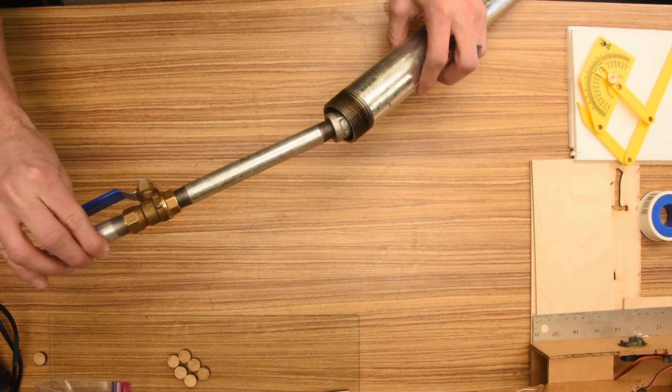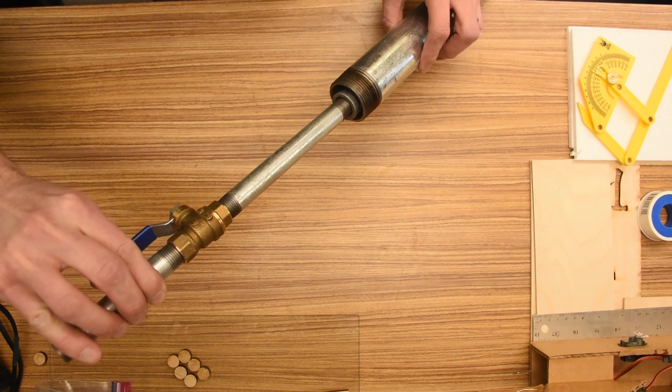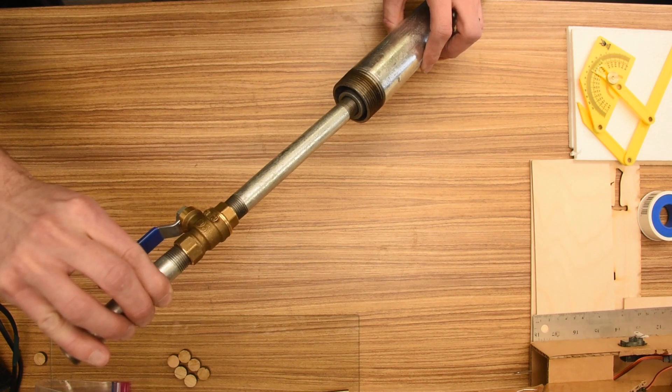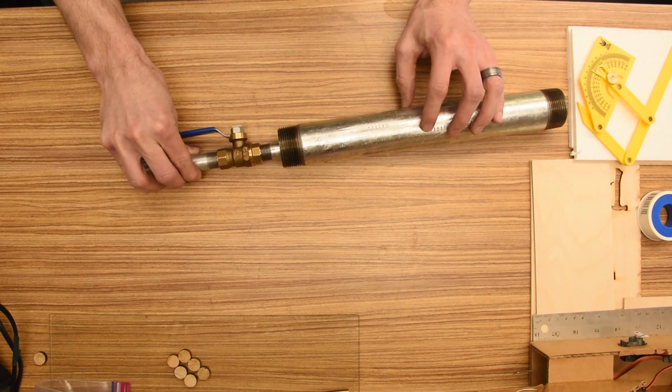It's going to go together like this, and I'll drill a hole in the end cap so the propane can shoot out. I've got a good amount of clearance between my end cap and the pipe for the air to flow through, and I'll insert my propane pipe into the shroud about this far.